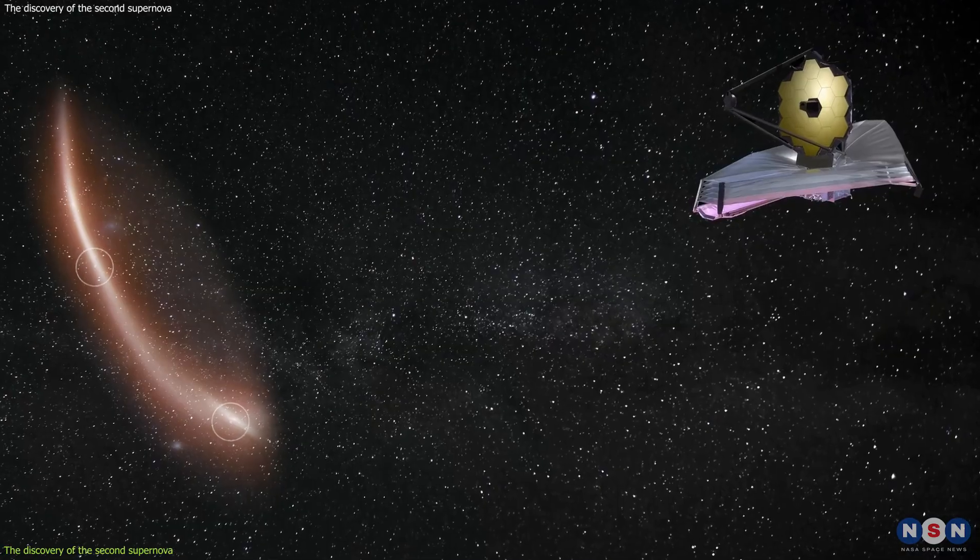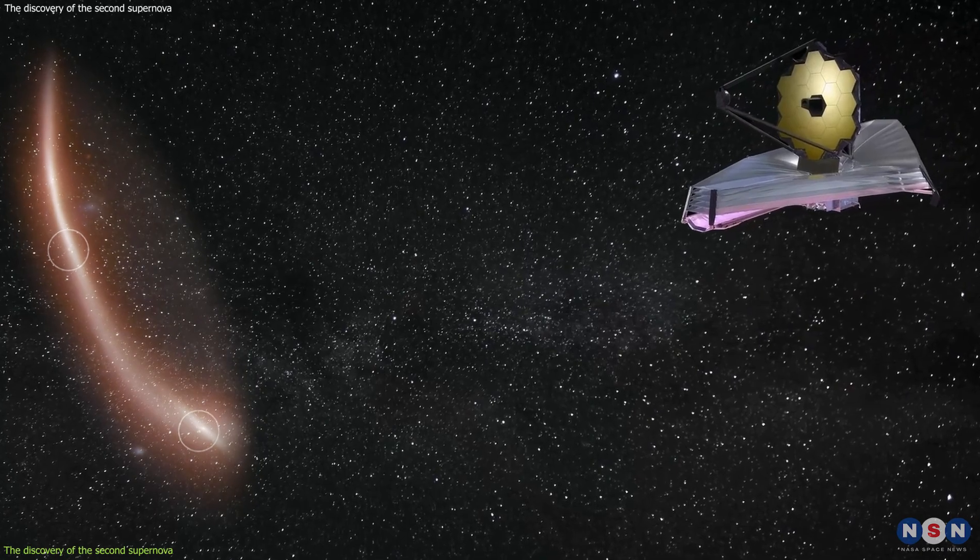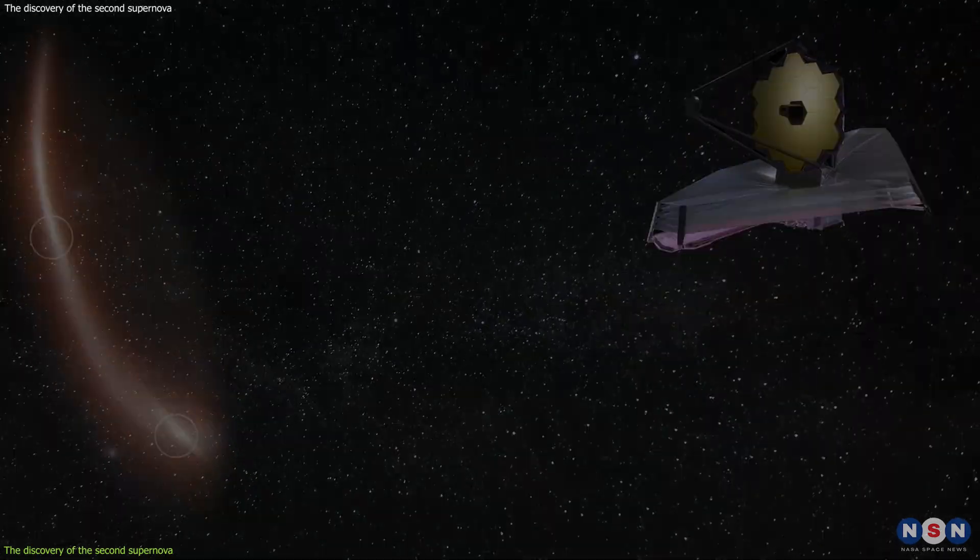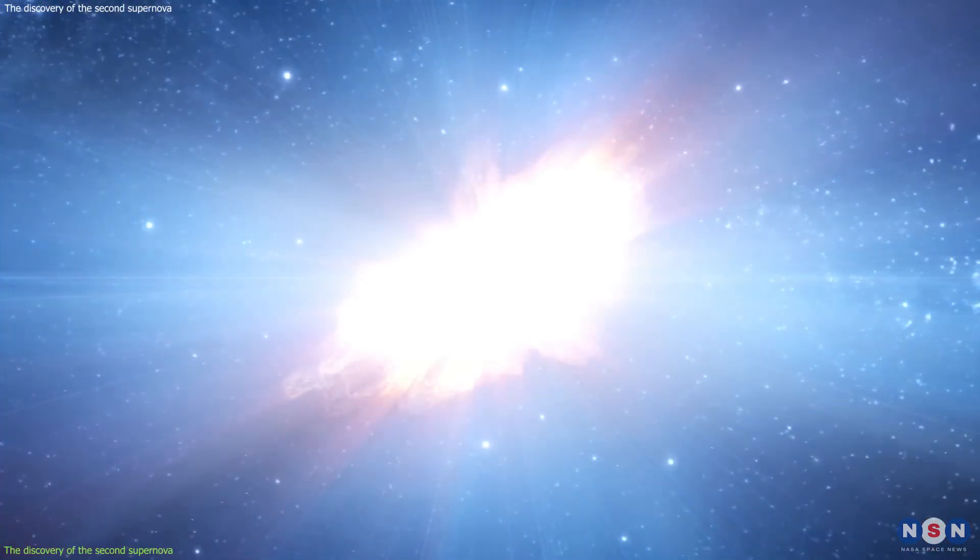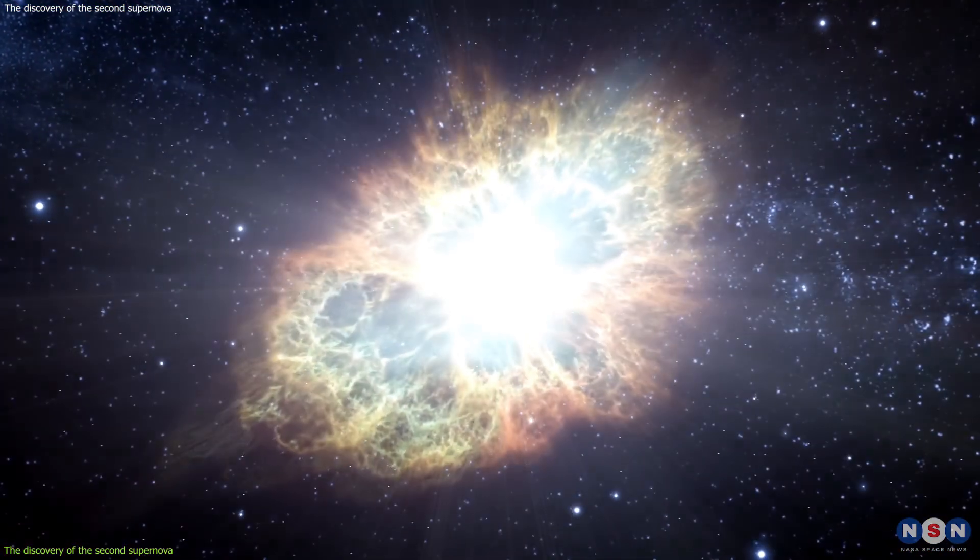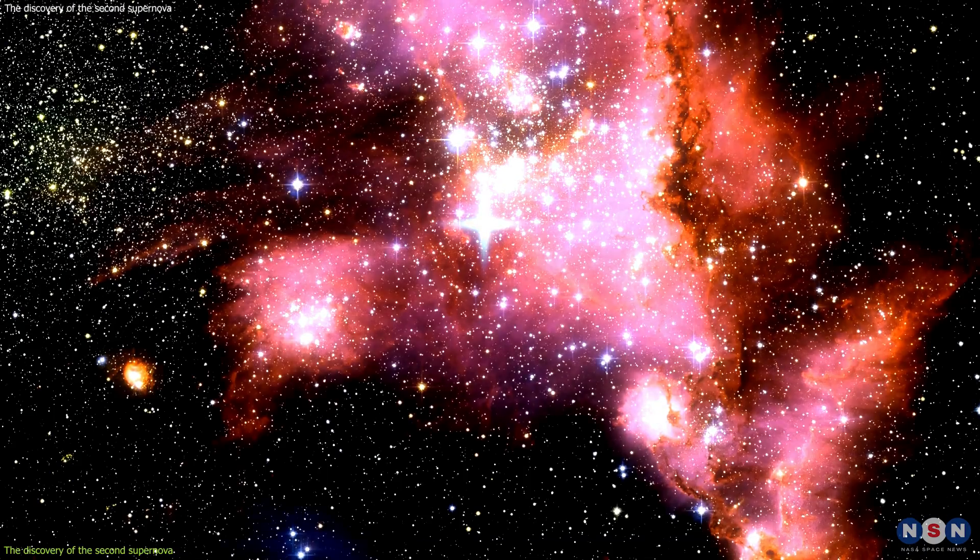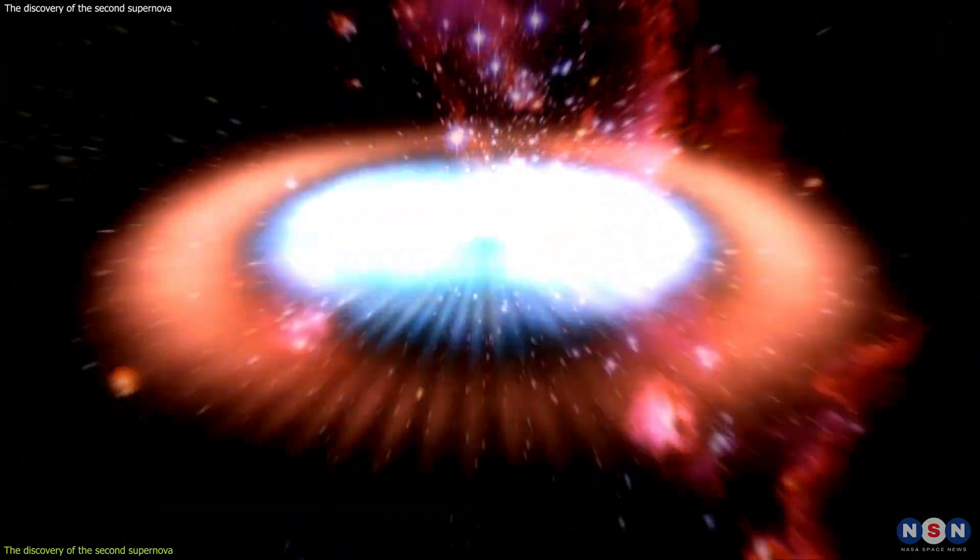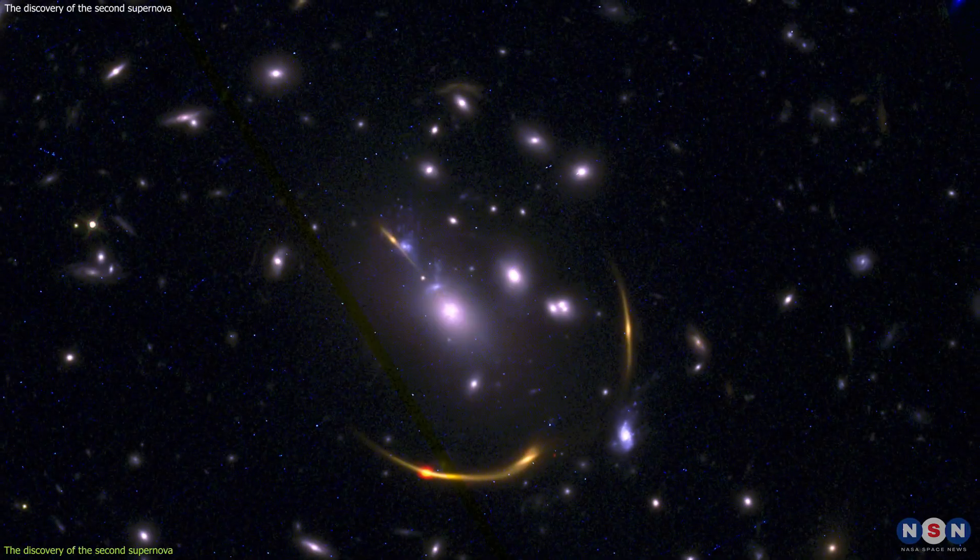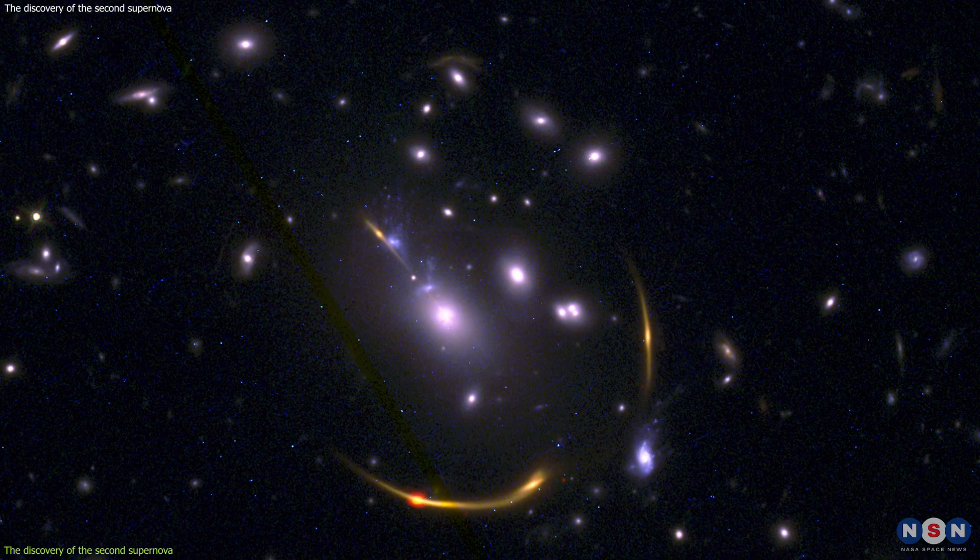In November 2023, Webb detected a bright spot in one of the images of this galaxy. This spot was not there before, and it turned out to be a supernova, which is a massive explosion of a dying star. Supernovae are among the most energetic and luminous events in the universe, and they can outshine entire galaxies for a brief period of time.